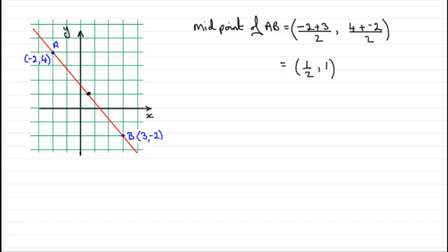OK, well, here's an example that you might like to try. Find the coordinates of the midpoint CD where C has coordinates minus three, minus three and D has coordinates one, three. Just pause the video and come back when ready.